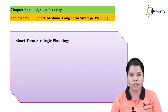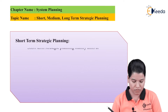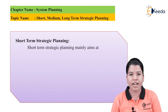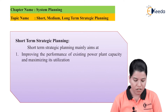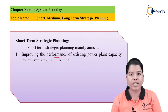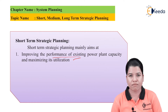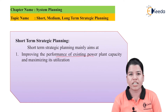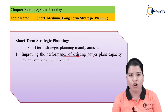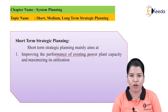First, let us study short term strategic planning. The short term strategic planning mainly aims at the following. First is improving the performance of the existing plant and maximizing its utilization. Whatever generating stations are existing today, it is very important to improve their performance and ensure proper utilization of the electricity generated. So short term planning considers this.